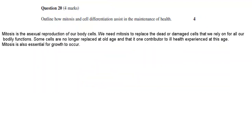So what I wrote is, first I talked about mitosis. Mitosis is the asexual reproduction of our body cells. So mitosis is basically how our body cells reproduce, or at least mitosis when we're talking about mitosis in terms of us. We need mitosis to replace the dead or damaged cells that we rely on for all of our bodily functions. So we have millions of cells dying on a daily basis. If we don't replace those cells, then our body will not function properly. Some cells are no longer replaced at an old age, and that is one contributor to ill health experienced at this age.